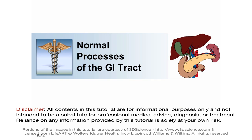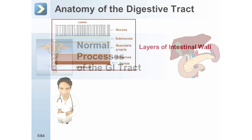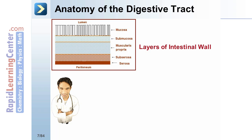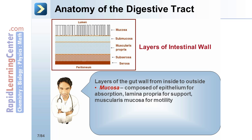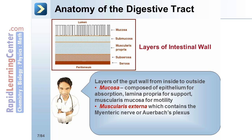Let's get started with a review of the normal anatomy and physiology of the GI tract. We begin with a review of the layers of the gut wall. From inside to outside, the layers are mucosa, muscularis externa, and the serosa adventitia.